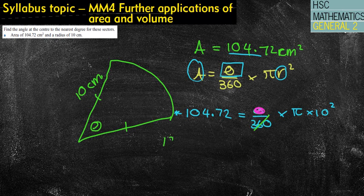So I'm going to do 104.72 times 360. That leaves me with θ times π times, and I might as well do 100 there because that's what 10 squared is. And then the last step I'm going to do, and again, I could put that in my calculator and get the answer. I'm not going to bother just yet.